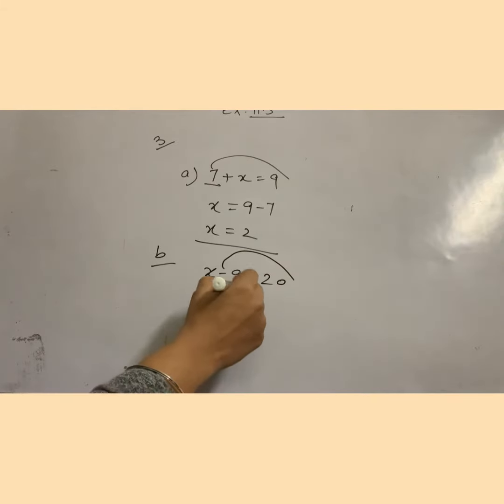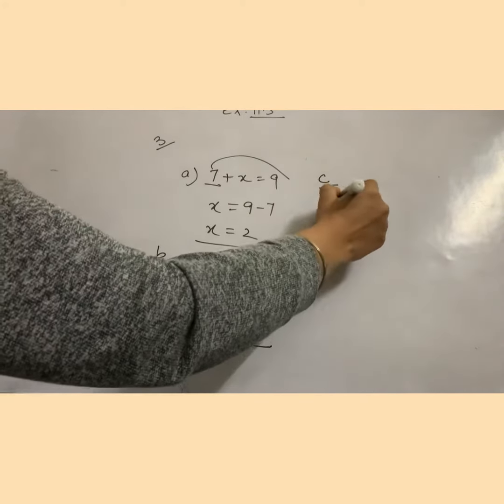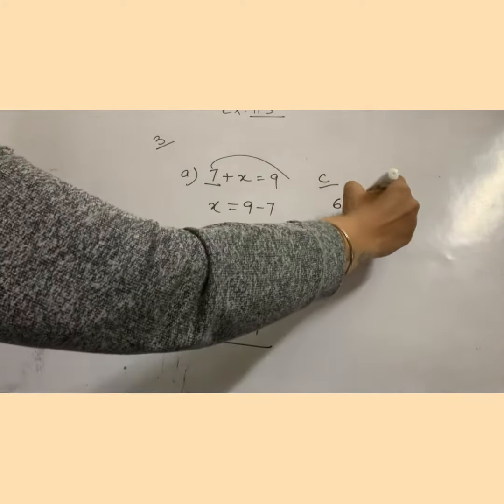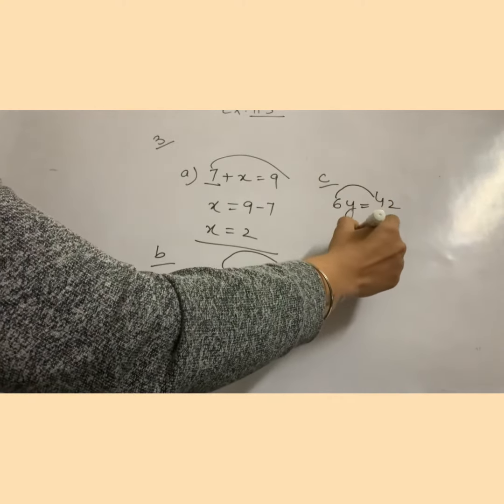Then 29 will be your answer. In the next c part, we have 6y. This 6 is multiplying here, and when we transfer this 6 here, then it will be divided.